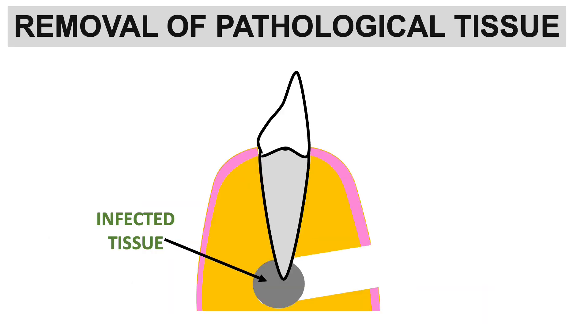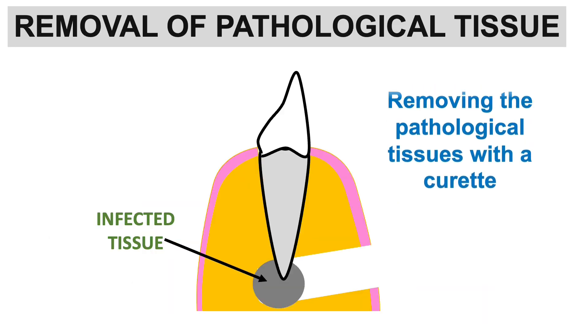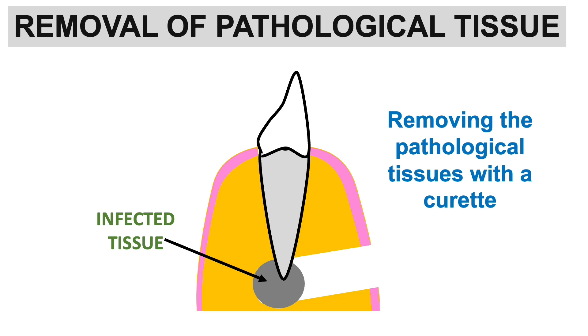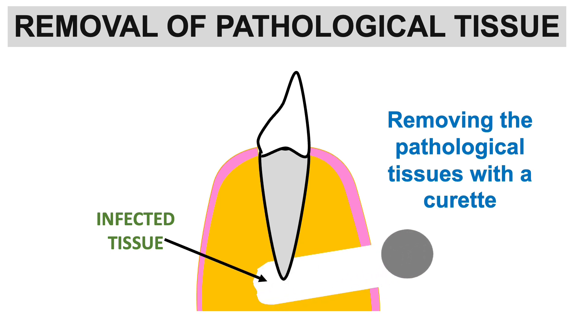After creating the osseous window, the next step is removal of pathological tissue. The pathological tissue is removed with the help of a curette, allowing easy removal of the periapical infected tissue.